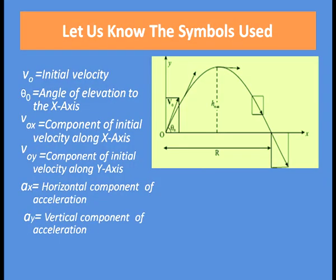The projectile is launched with an initial velocity V0 at an angle θ₀, known as the angle of elevation. The symbols used are: V0 is the initial velocity, θ₀ is the angle of elevation to the x-axis, Vox is the component of initial velocity along the x-axis, Voy is the component of initial velocity along the y-axis, Ax is the horizontal component of acceleration, and Ay is the vertical component of acceleration.